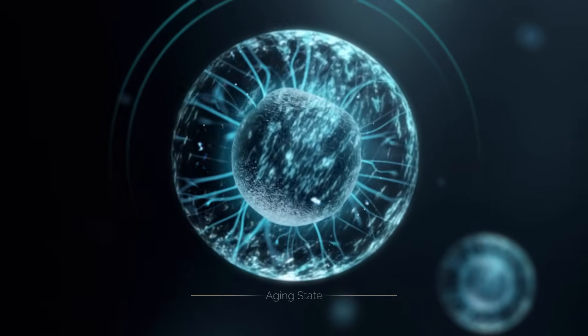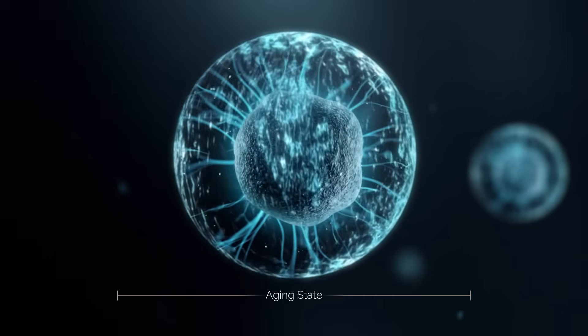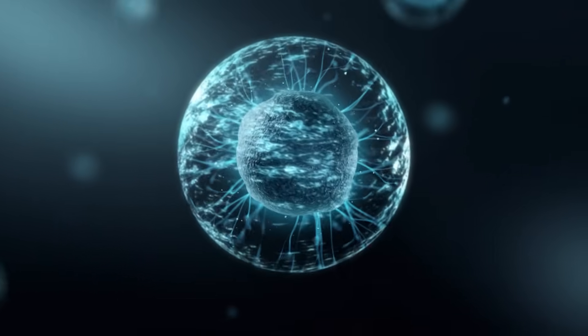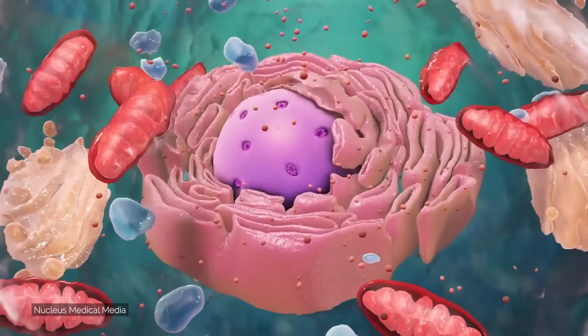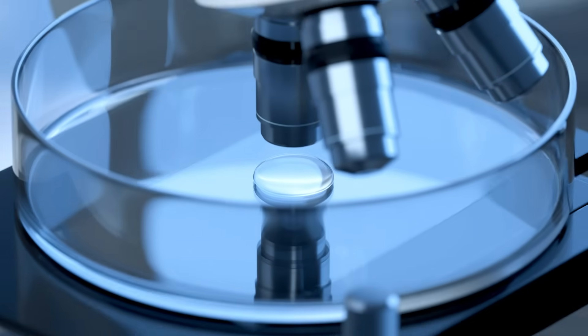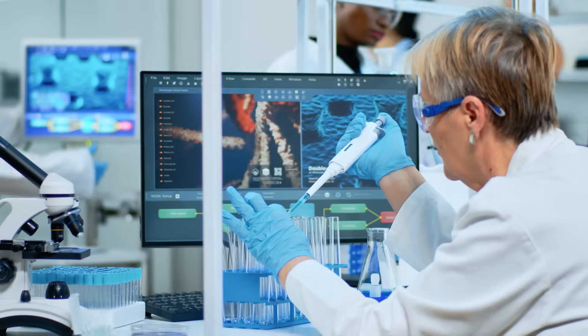a living biomarker—a way to read a cell's aging state in real time without destroying it. Imagine checking a pulse for aging itself, watching how it rises, falls, and responds as we nudge biology and learn what truly helps.